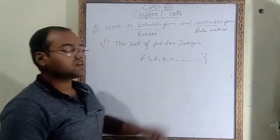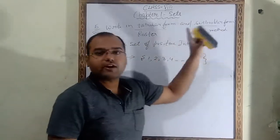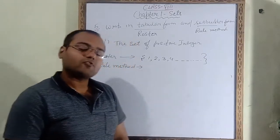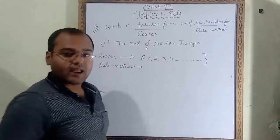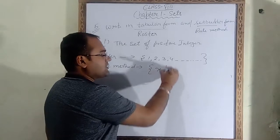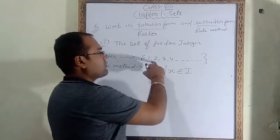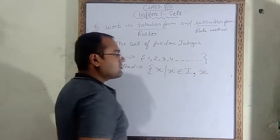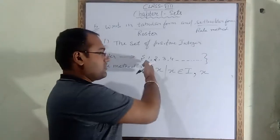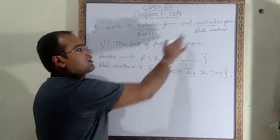Such a method of representation is called roster or tabular form. Now we have to write the rule method. In the rule method you write the common property of the elements. The common property is that these all are positive integers. We write: { x : x ∈ I, x > 0 }, where I means integer and x greater than 0 captures all positive integers. This is your rule method or set builder method.